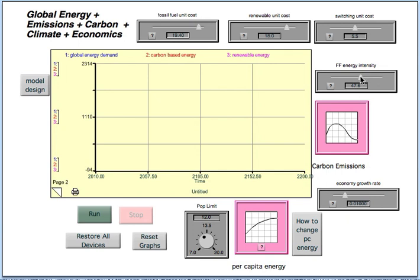The key variable here is the fossil fuel energy intensity. This is a little slider you can run back and forth. It's the exajoules of energy per gigaton of carbon.